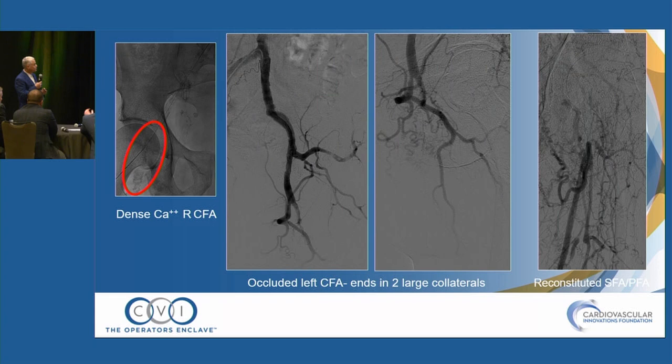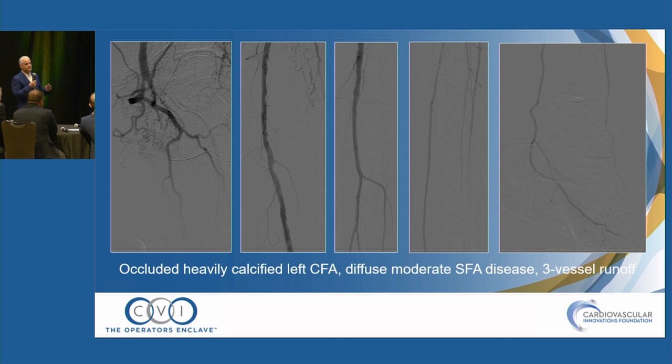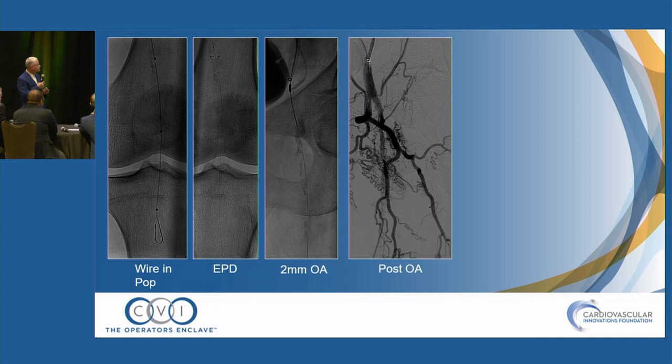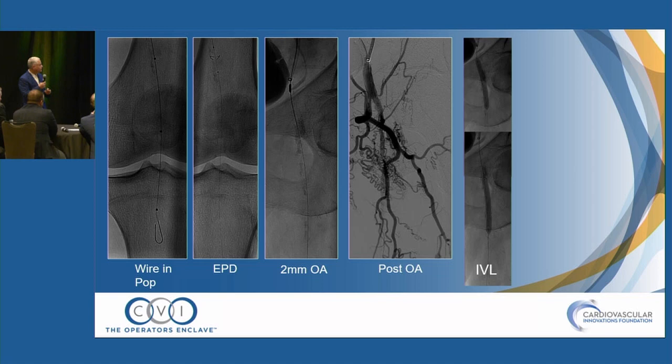Here's another case: a patient with complete occlusion of the common femoral artery, reconstituting distally with no obvious nubbin and ending in two large collaterals. We did ultrasound-guided SFA retrograde access, got through the occlusion, snared and exteriorized the wire, placed embolic protection distally, made a pilot channel with orbital followed by IVL — with a pretty spectacular result.